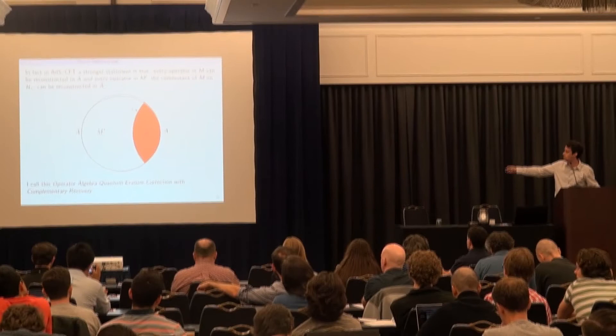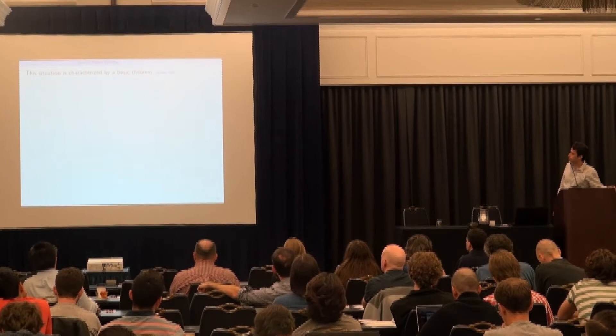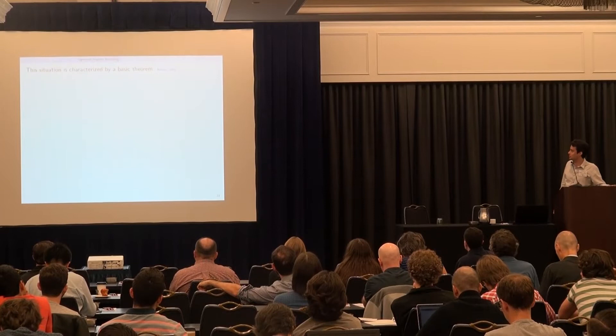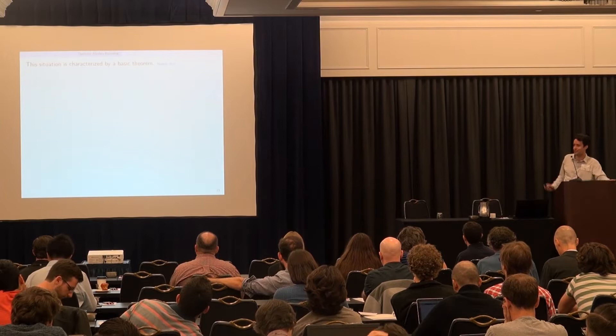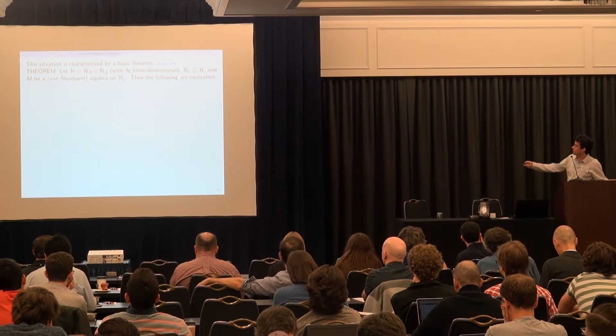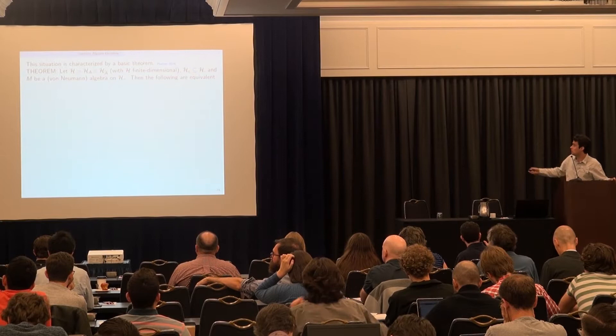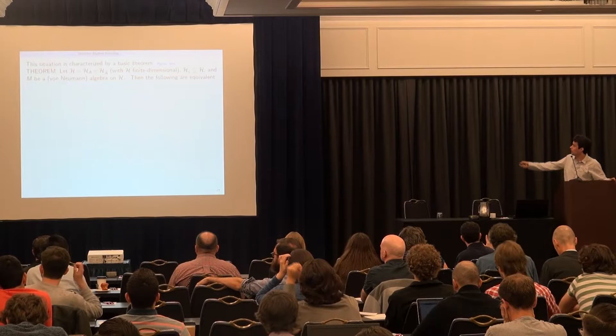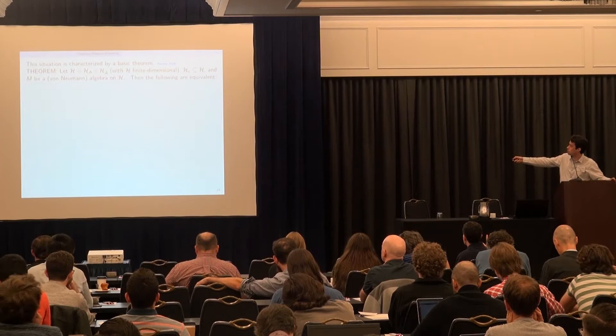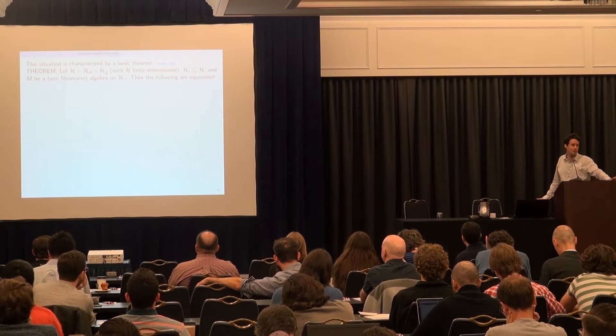This situation is characterized by a theorem. We have a finite-dimensional Hilbert space that's a tensor product into A and A-bar, a code subspace living inside it, and a von Neumann algebra on the code subspace. The theorem says three things are all equivalent: if one is true, the rest are also true. The first is complementary recovery — every operator in M can be reconstructed on H_A, and every operator in M' can be represented on H_{A-bar}.